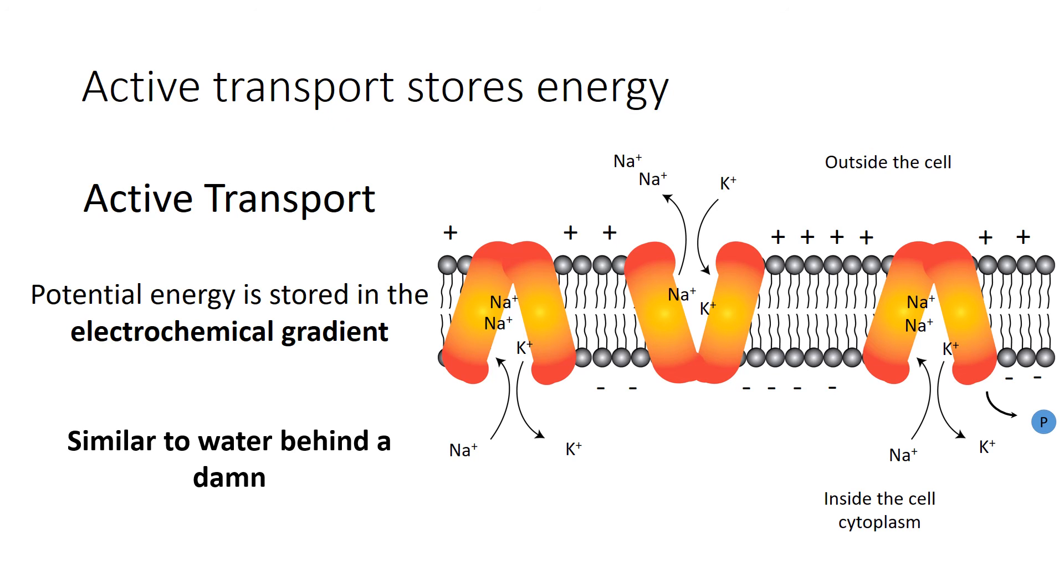And this electrochemical gradient, that's similar to water behind a dam. So the water wants to flow downhill and reach equilibrium. Well, all of these ions, they want to be in equilibrium with themselves.